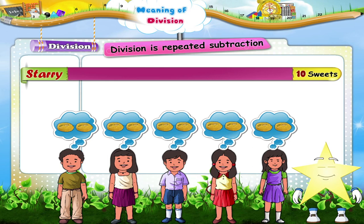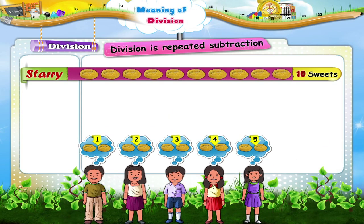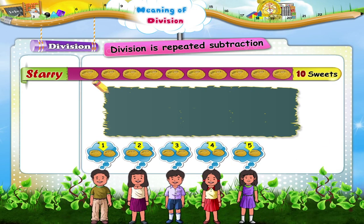Starry, when we remove a group of two objects at a time from a group of ten, we get five such groups of two each. This means that when we subtract two from ten, five times, zero remains.